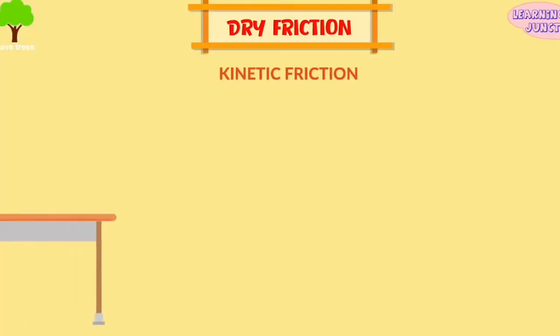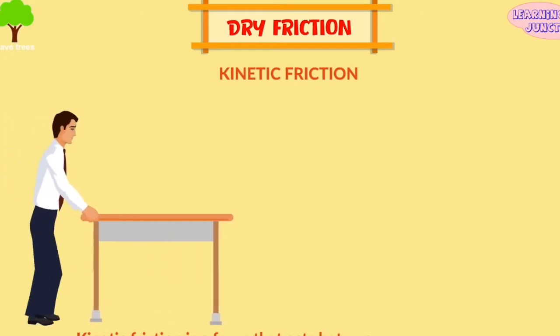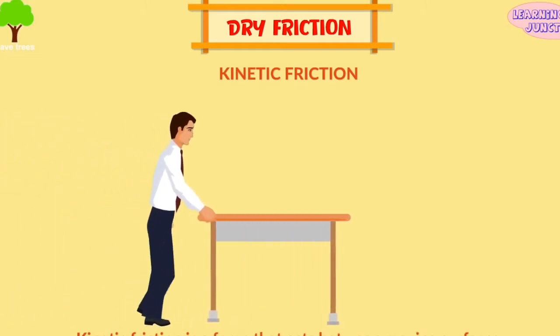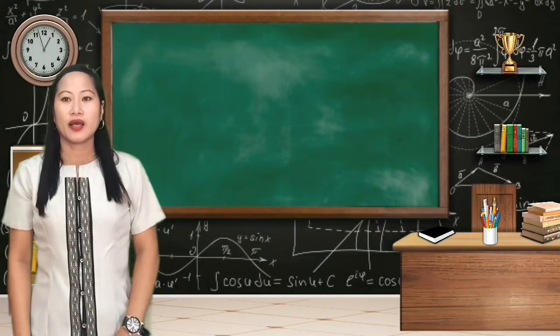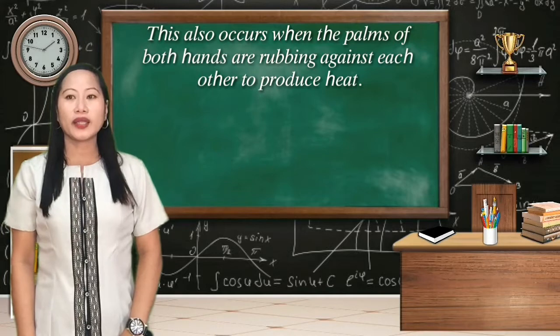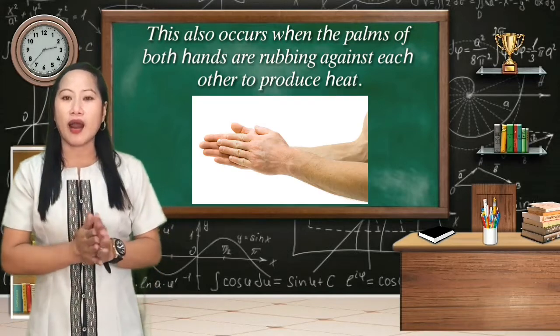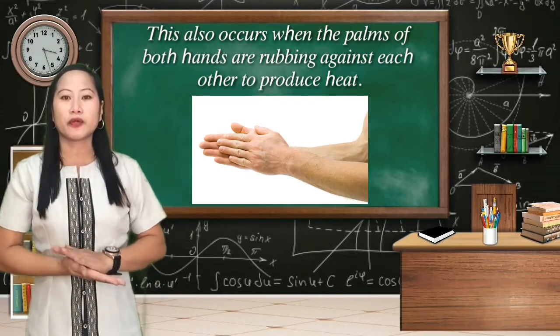Sliding friction, also called dry friction, occurs when two objects rub or slide against each other. This also occurs when the palms of both hands are rubbing against each other to produce heat.